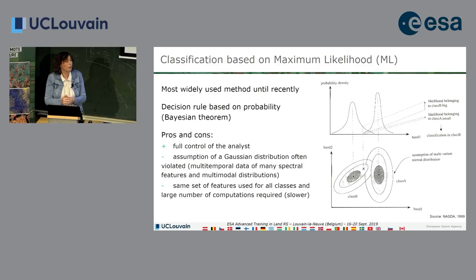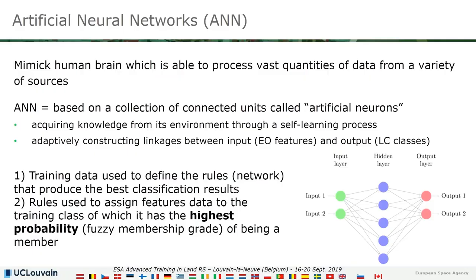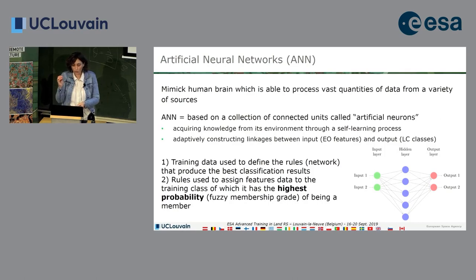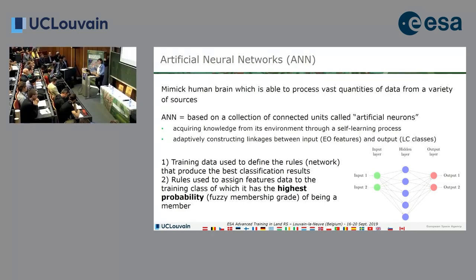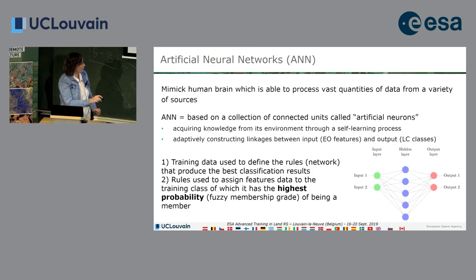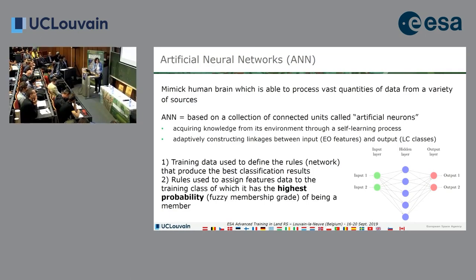A second kind of supervised algorithm is the artificial neural network. The objective of this algorithm is to mimic the human brain, which is able to see and analyze a lot of information coming from different sources and make links between datasets. The neural network is a connection of artificial neurons. In this simple example you have your input, your output which are the classes of interest, and there is only one hidden layer, but you can add several levels of layers.